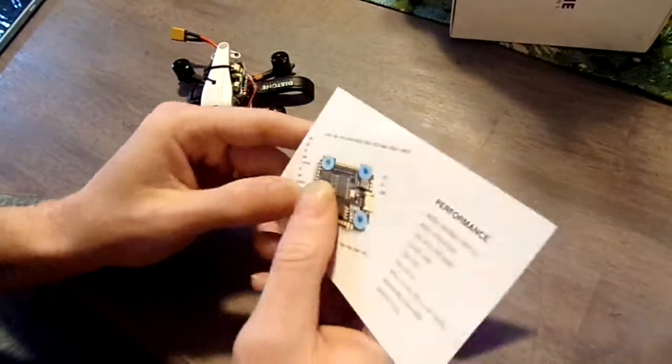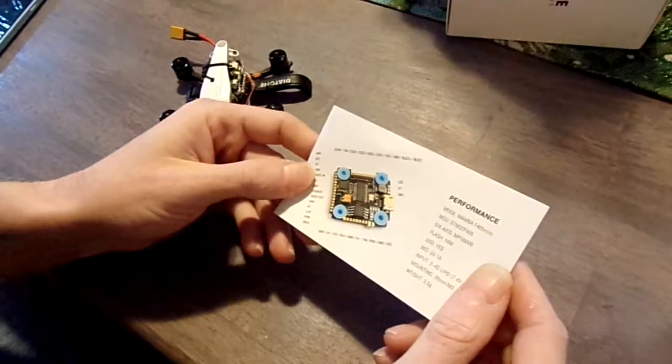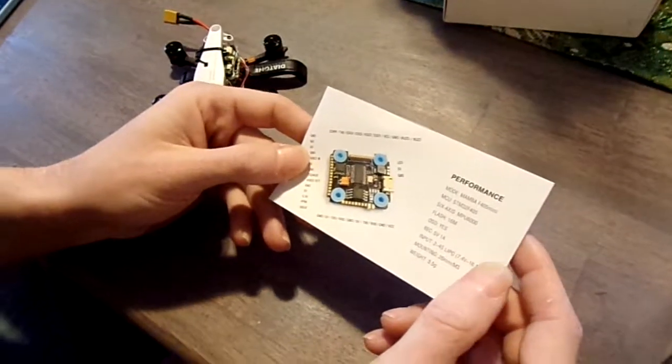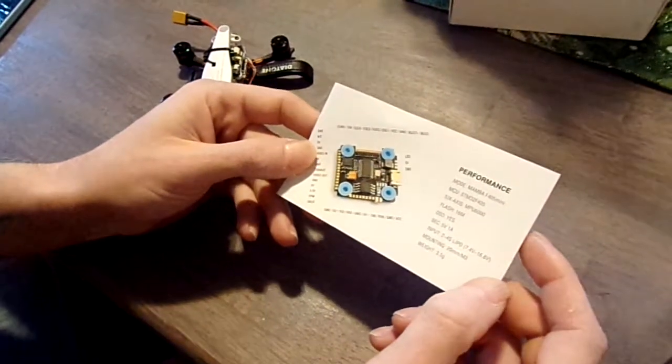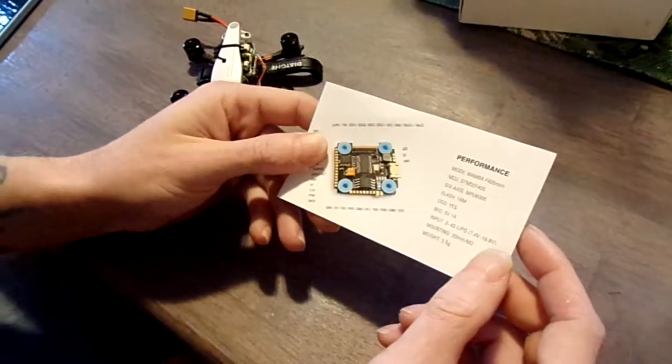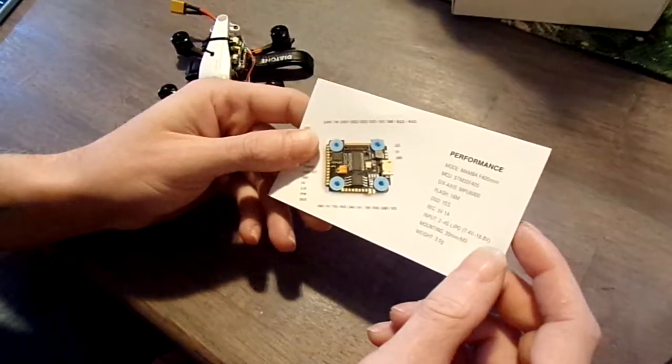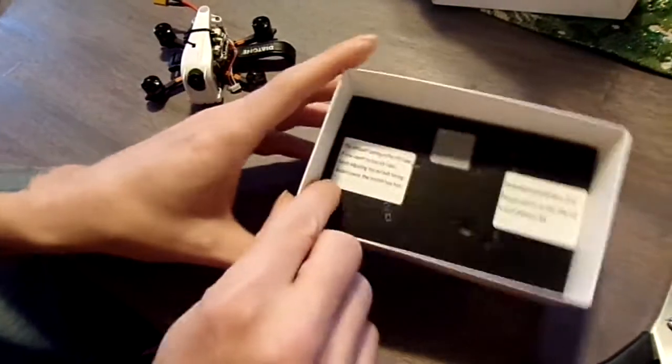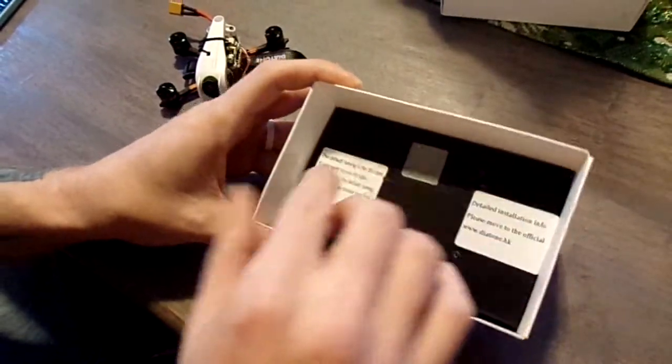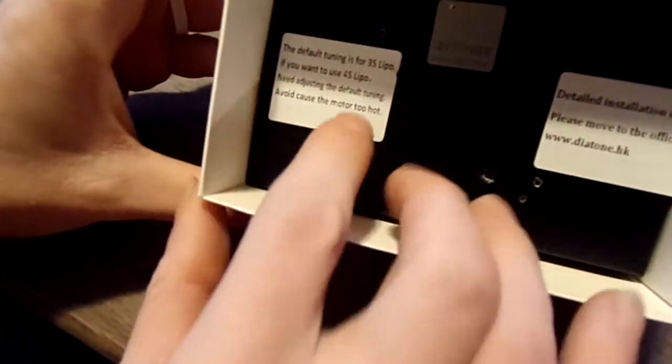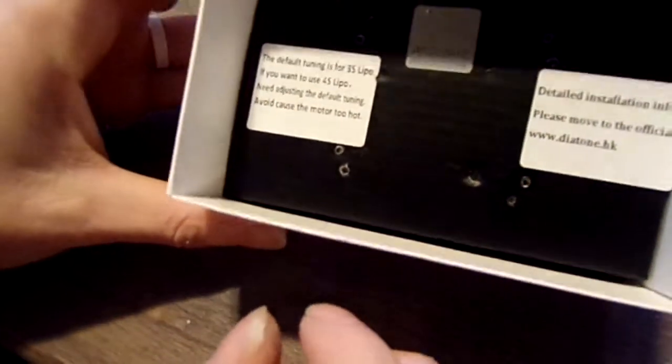It has the Mamba F405 Mini. It's got OSD. It's 2 to 4S quad. You can run 2 to 4S on it, and I think it said it is tuned for 3S. So if you run 4S on it, you'll probably have to retune it. Yeah, right there. Default tuning is for 3S LiPo. If you want to use 4S, you'll have to retune it.